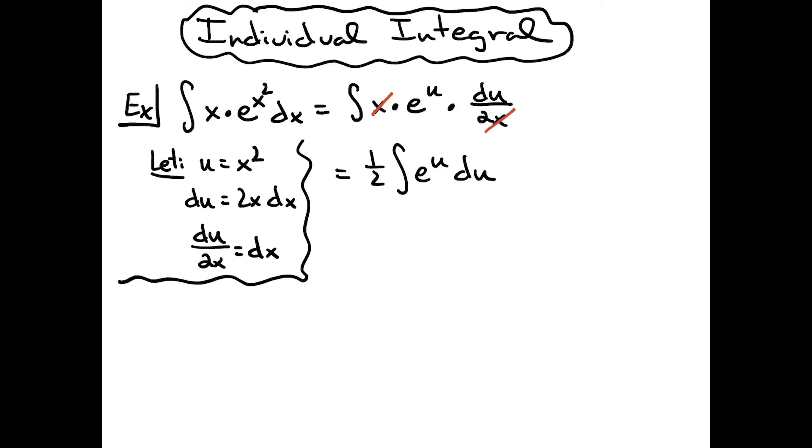At this point, we're down to an integral that we can integrate. When you integrate e to the u, you get e to the u. So we're going to have 1/2 e to the u plus c.